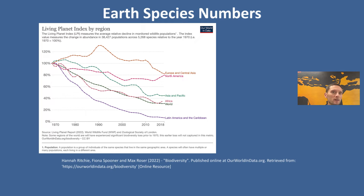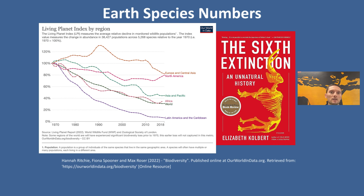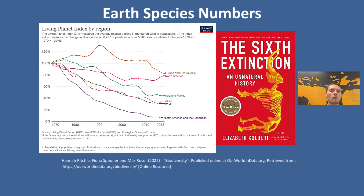A book I would really recommend is called The Sixth Extinction — a Pulitzer Prize winning book written by Elizabeth Kolbert — that looks at the possibility of a sixth extinction that we may be undergoing right now in terms of the number of species going extinct. It's normal for species to go extinct during Earth's history; however, the rate at which we're seeing species go extinct right now is much greater and suggests we may be experiencing a sixth extinction.